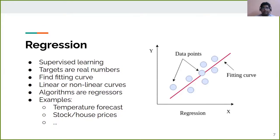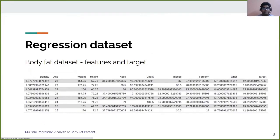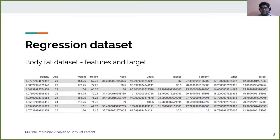Example datasets for regression tasks include temperature forecast, stock and house prices prediction, and so on. One example dataset is the body fat dataset. Here, we try to predict the percentage of body fat using different features of the human body — for example, age, weight, height, the width of neck, chest, and biceps. On the rightmost column, we have a target defined: body fat percentage. These are real numbers, which makes it a regression task.